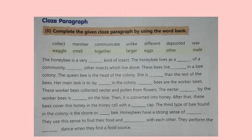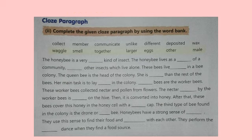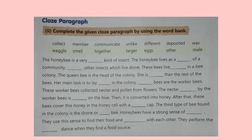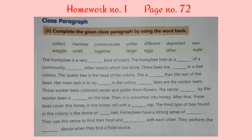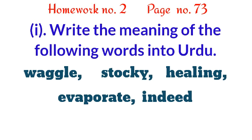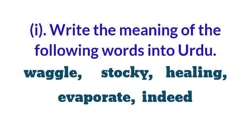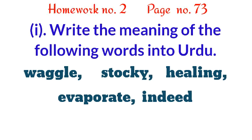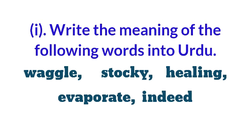Daswaarb ko simaani hain kisi ibaarat mein se chupe hue alfaz ko poora karne ki mashq. Question number two: complete the given close paragraph by using the given words. So, children, you need the second homework on page number 72, where you will have a close paragraph. The words are: first number — waggle, second number — stocky, third number — healing, fourth number — evaporate, fifth number — indeed.